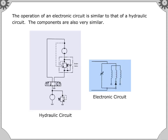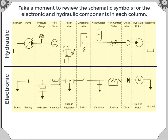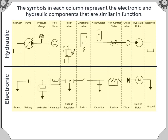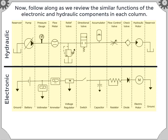The operation of an electronic circuit is similar to that of a hydraulic circuit. The components are also very similar. Take a moment to review the schematic symbols for the electronic and hydraulic components in each column. The symbols in each column represent the electronic and hydraulic components that are similar in function. Follow along as we review the similar functions of the electronic and hydraulic components in each column.